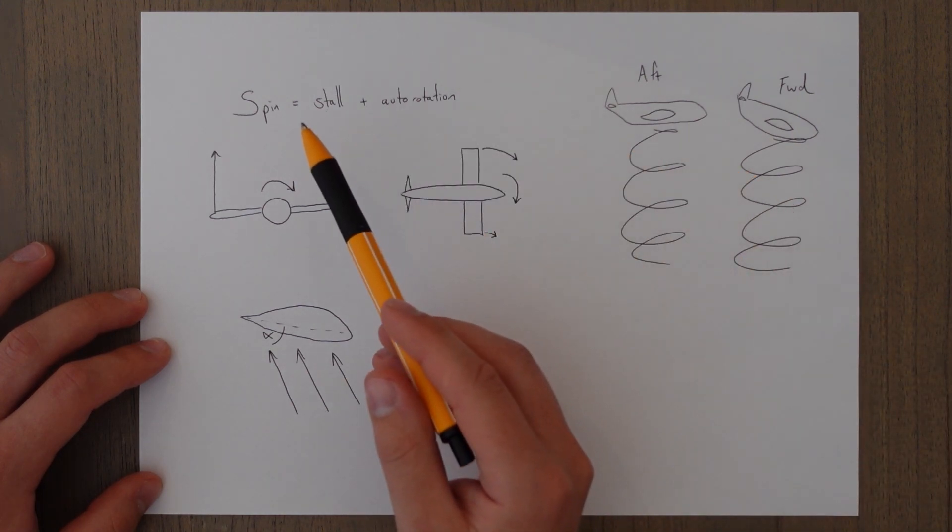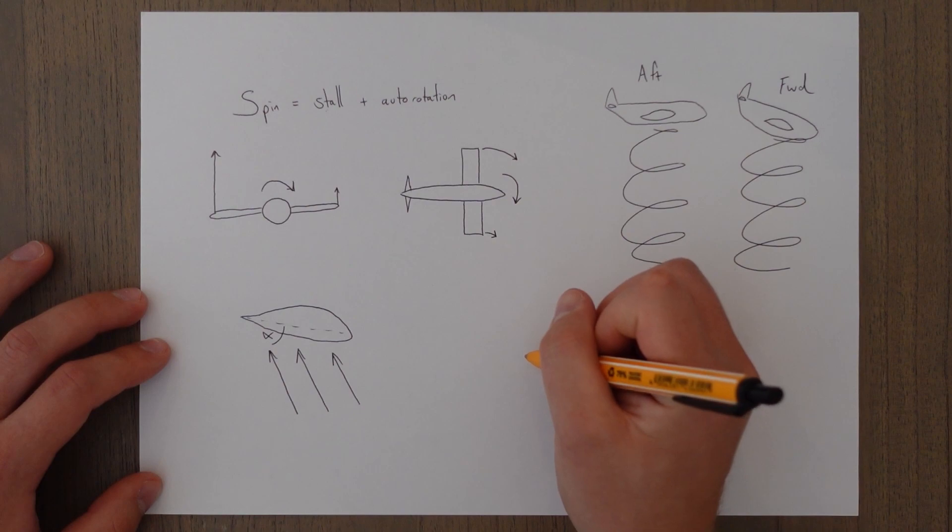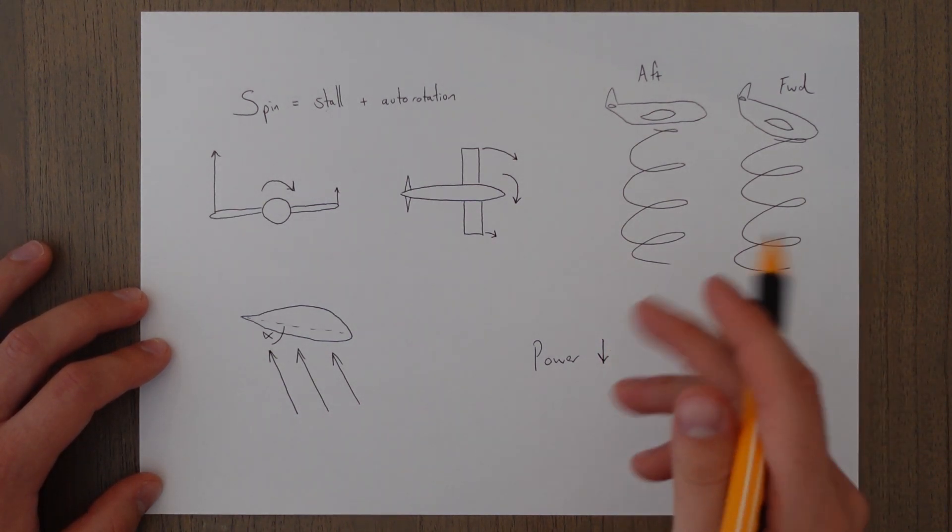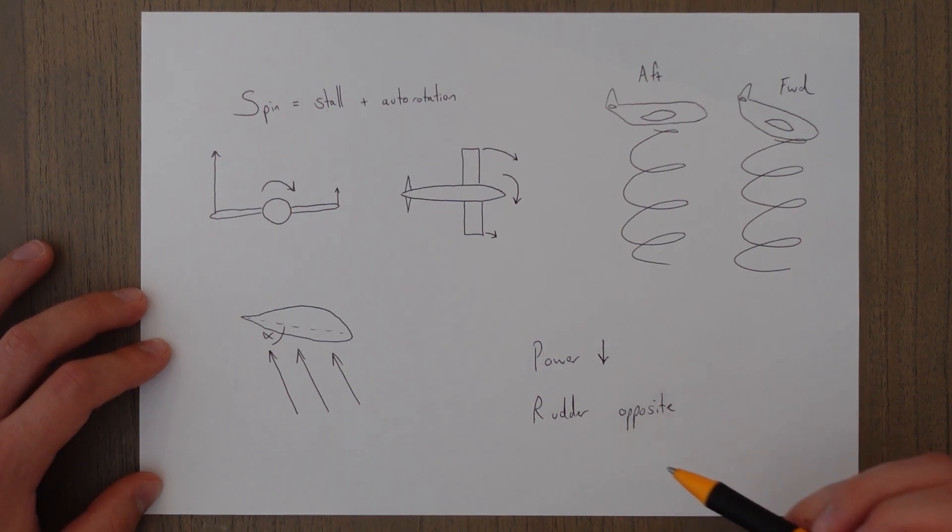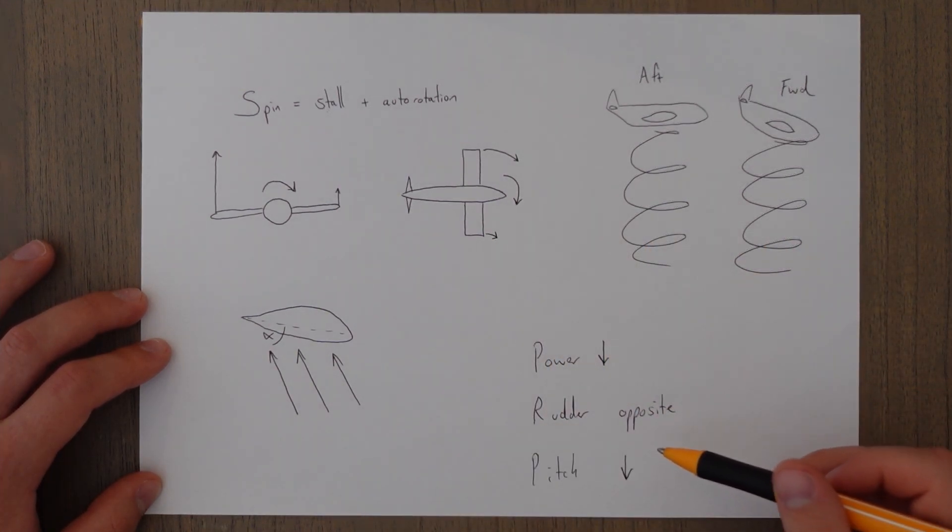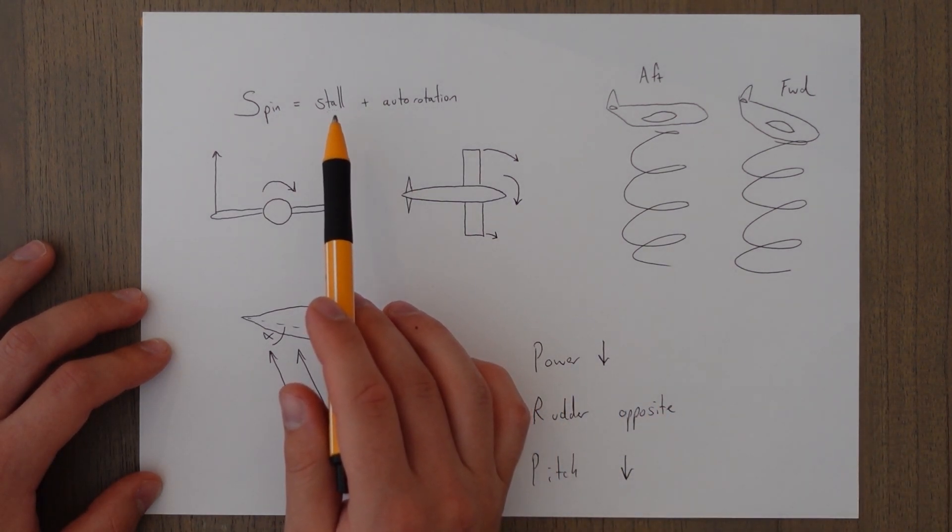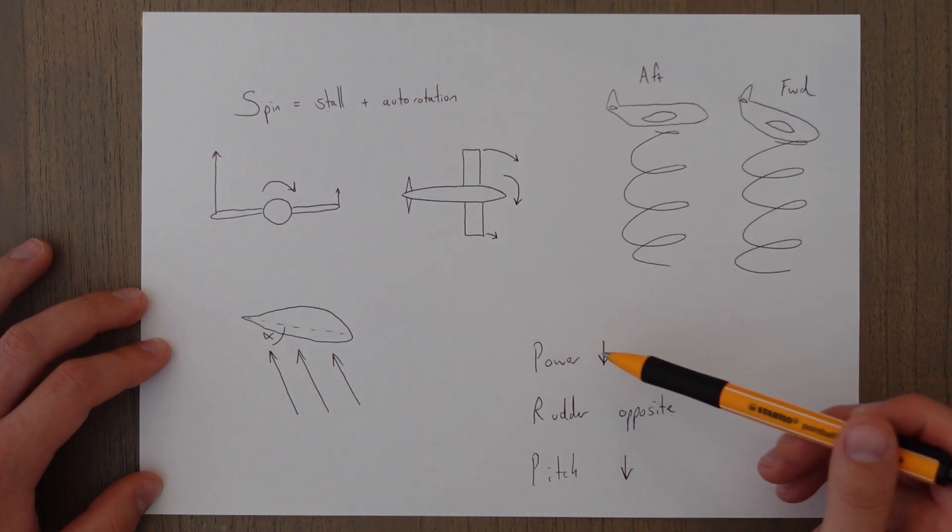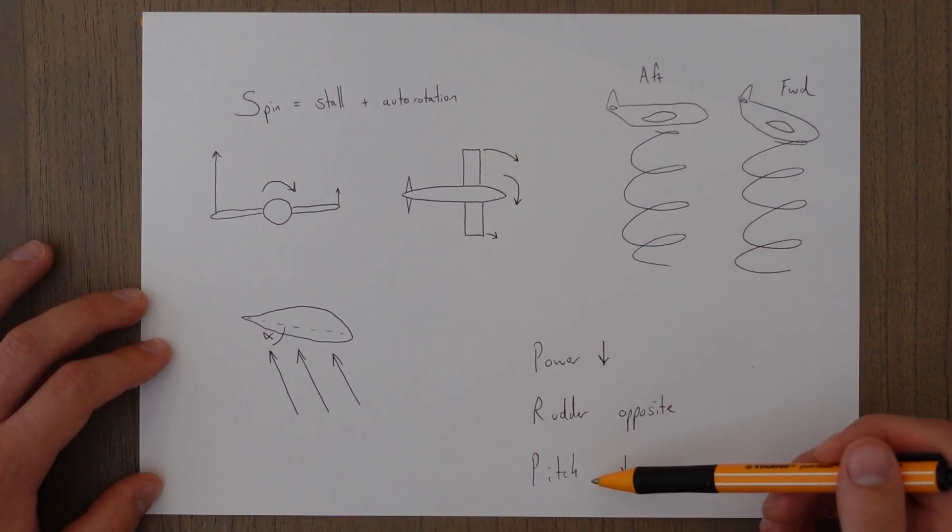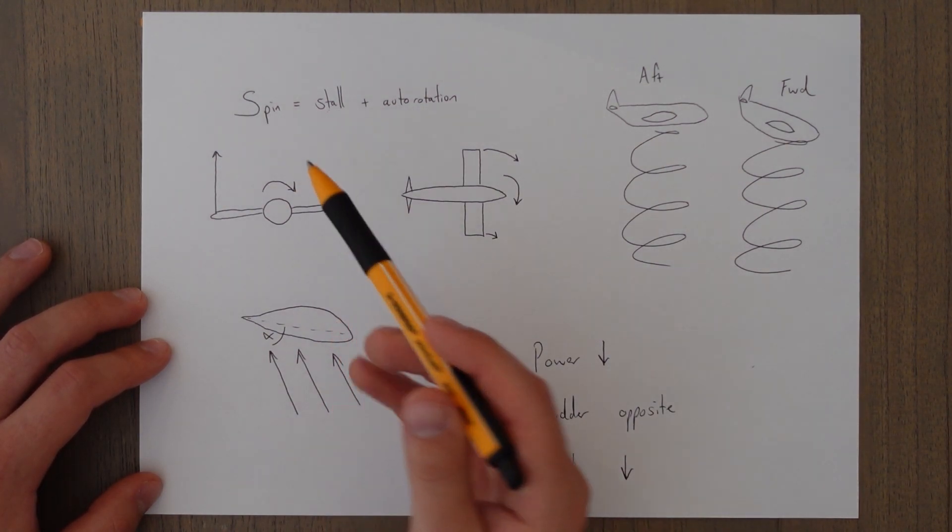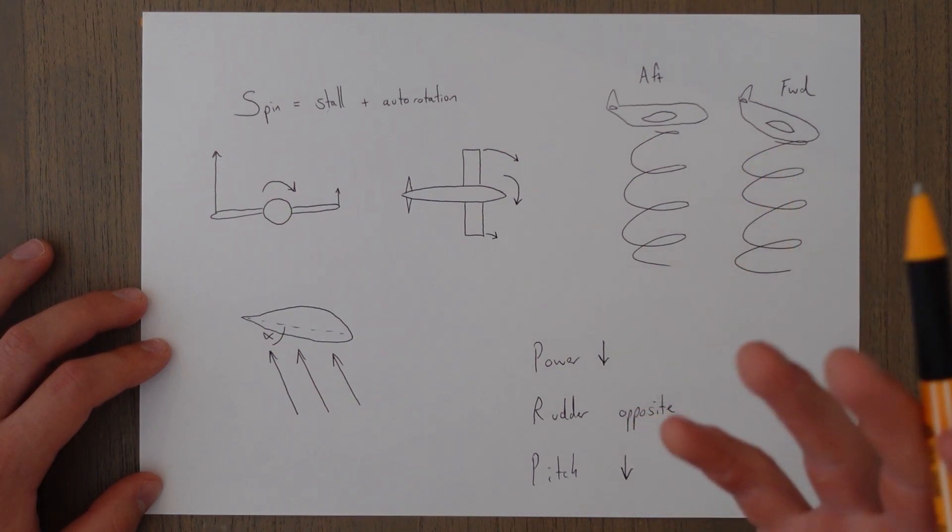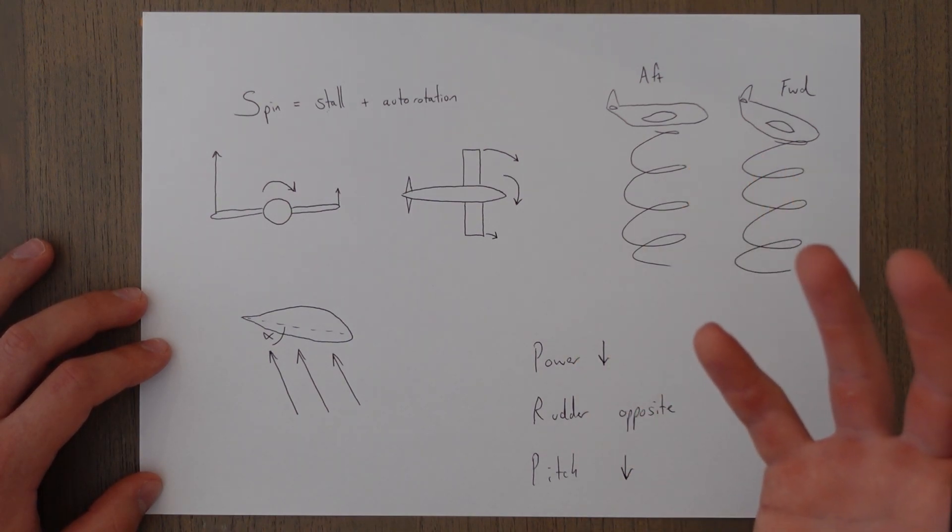To recover we have to get out of the stall and stop auto rotation. Three steps are to reduce the power to take away any inertial centrifugal forces caused by the spinning engine. We then apply rudder in the opposite direction to the spin because the rudder is more likely to still be effective than the ailerons on the wings and then we try and lower the nose because that's the only way to get out of the stall condition is to reduce the angle of attack. So by reducing the power we make the problem easier to solve by doing the rudder in the opposite direction we get rid of the auto rotation and reducing the pitch we avoid the stall. And then when we recover we're going to be very nose down so it's important not to pull back too hard otherwise we could get that high load factor and our stall speed will increase and we could go back into the stall and maybe even back into the spin.